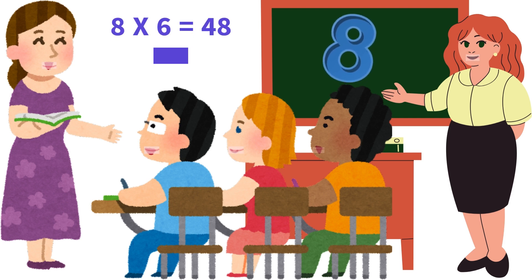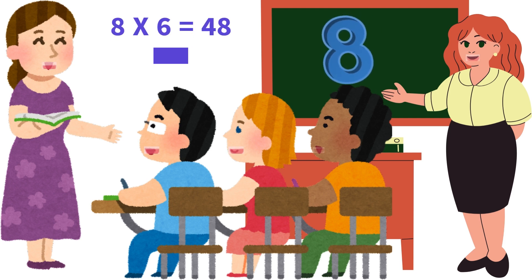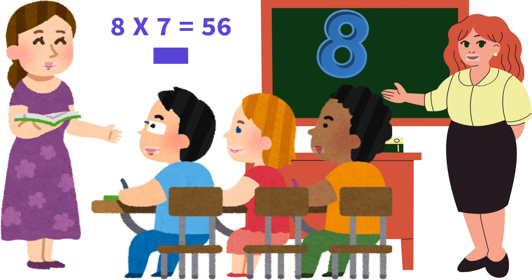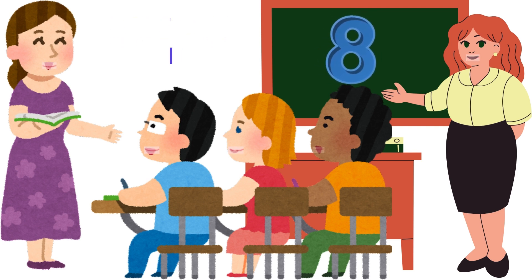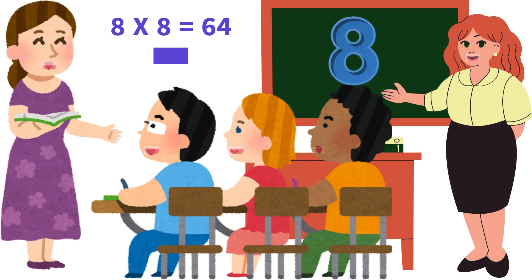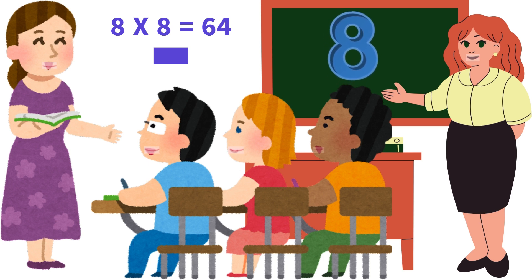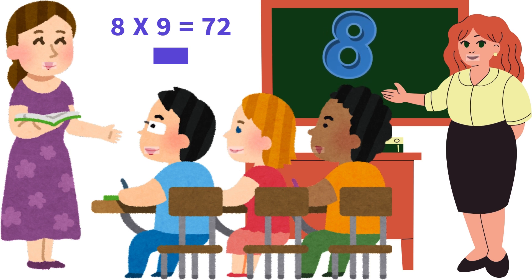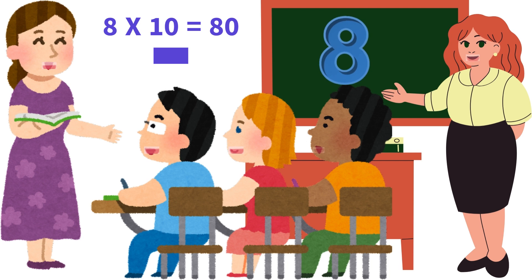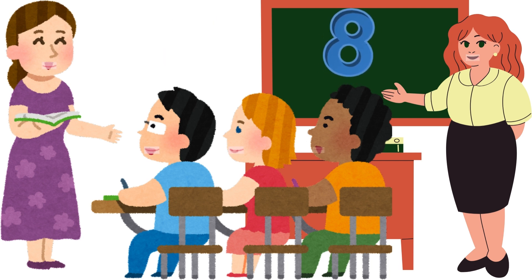8 sixes are 48, 8 sevens are 56, 8 eights are 64, 8 nines are 72, 8 tens are 80.